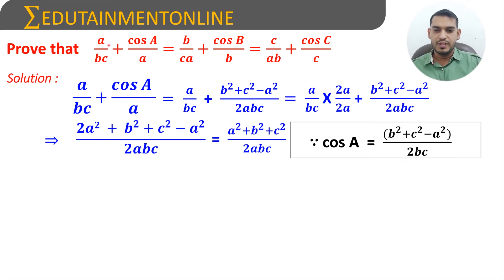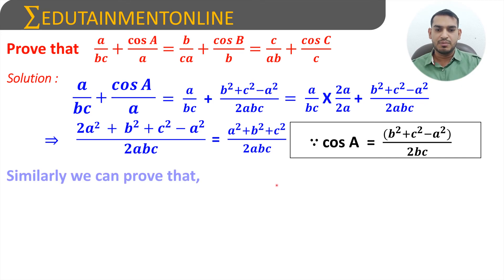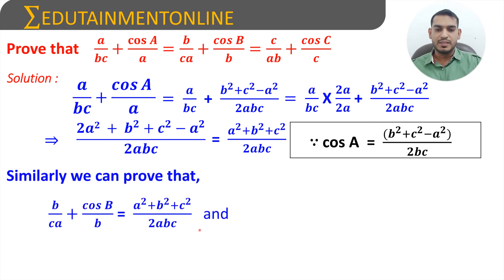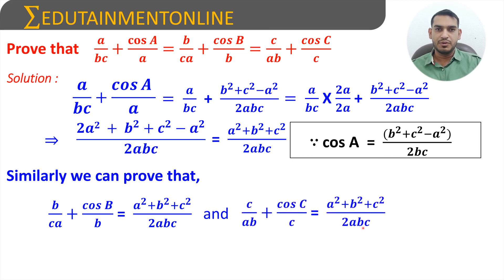For the second term, b/(ca) + cosB/b, we apply the same process. Resolving it using the cosine rule for cosB similarly gives (a² + b² + c²) / 2abc. The third term, c/(ab) + cosC/c, when resolved using the cosine rule for cosC, also gives (a² + b² + c²) / 2abc.